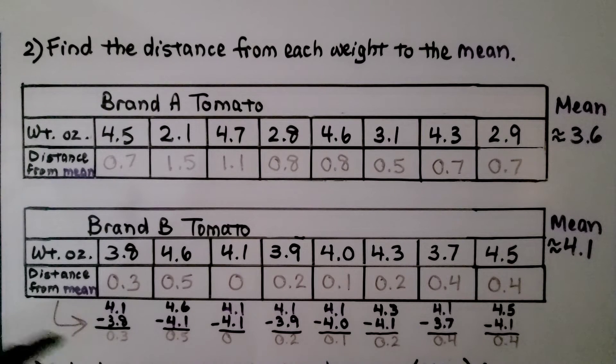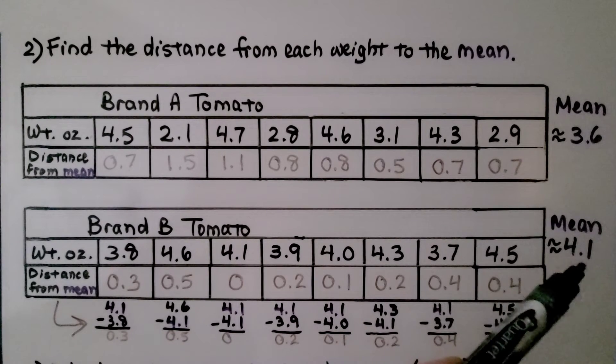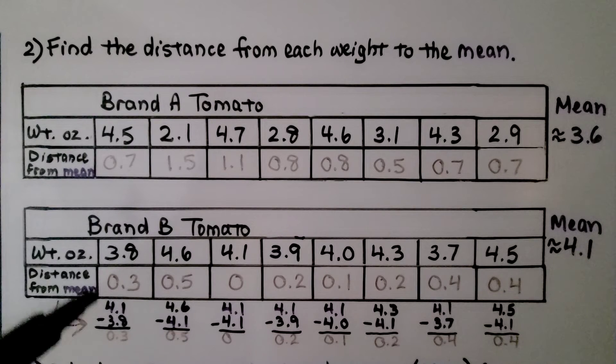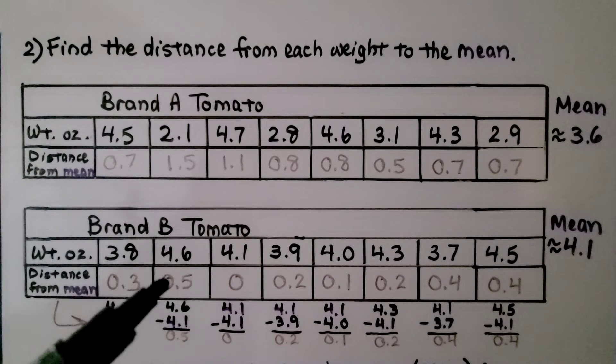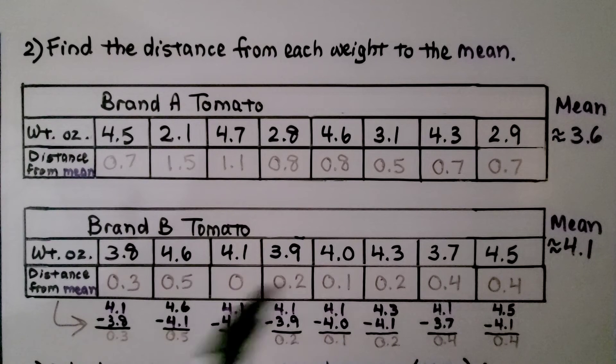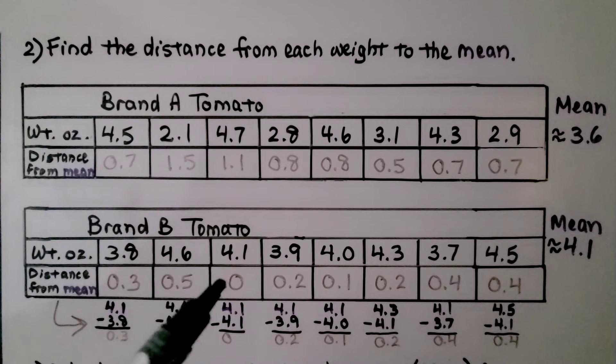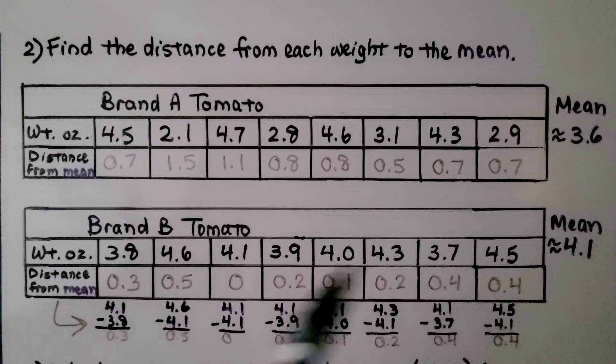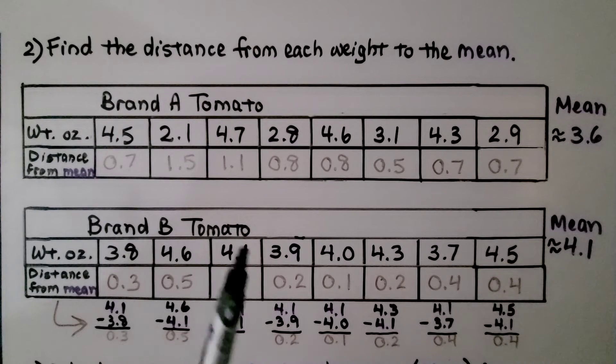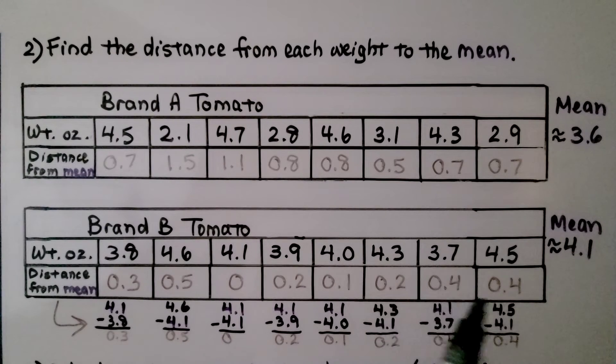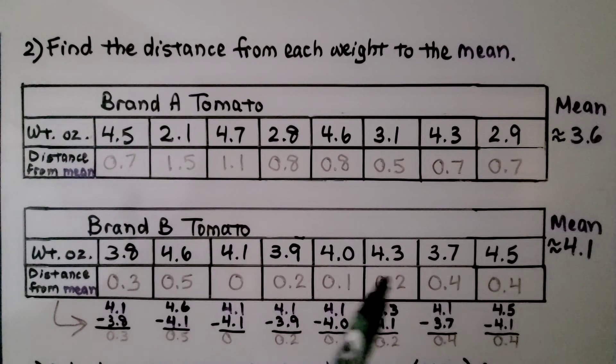We do the same thing for brand B. What we're doing is we have a mean of about 4.1, so we subtract 3.8 and we get 3 tenths. And 4.6 minus 4.1 is 5 tenths. And 4 and 1 tenths minus 4 and 1 tenths is a zero. And this is important. We need to keep this zero here because it is one of the eight. We need to divide by eight. If we didn't count that zero, we'd be dividing by seven and we'd get a different answer. We do it for each of these data values and find the distance from the mean. And we mark them into the table.